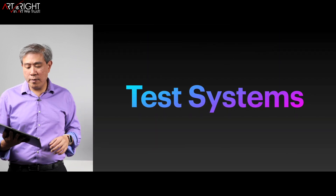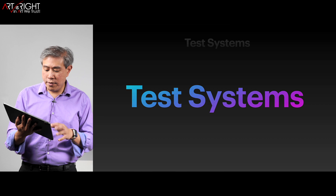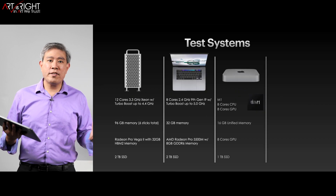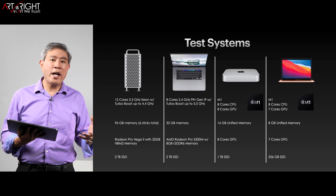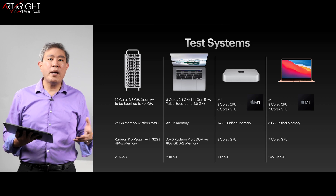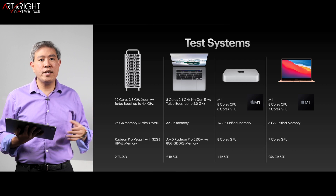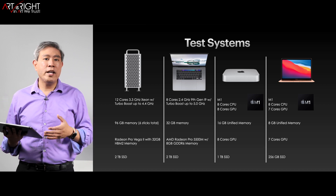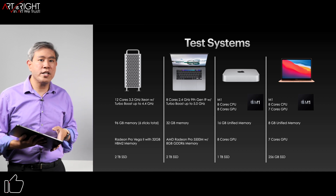Let's quickly go over the test systems I've used. I'm simplifying my M1 test library by including two machines: the Mac Mini and the MacBook Air M1. The Mac Mini is the upgraded 8-core, 8 GPU, 16 gigs of RAM. The MacBook Air is the 8-core, 7 GPU, and 8 gigabytes of memory.